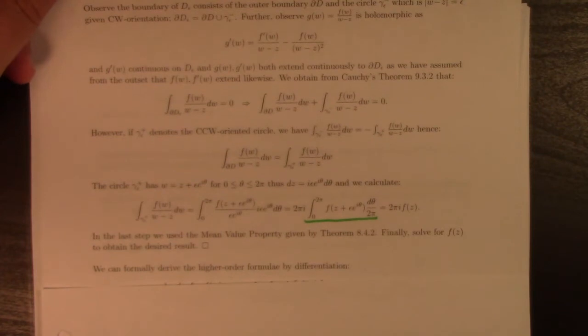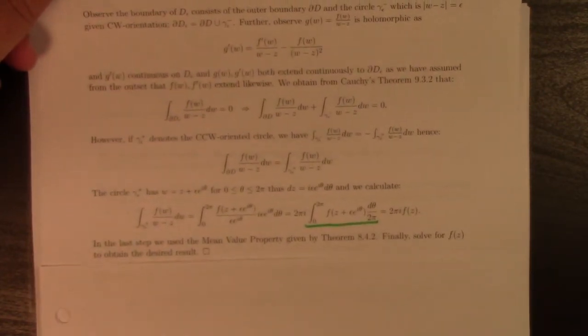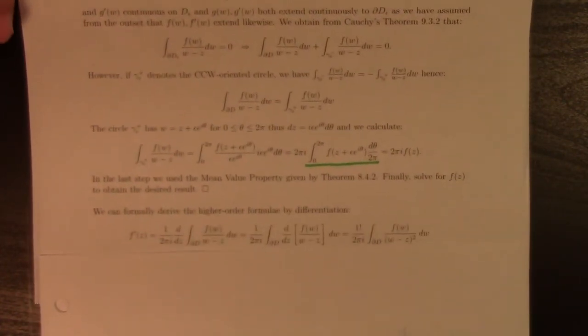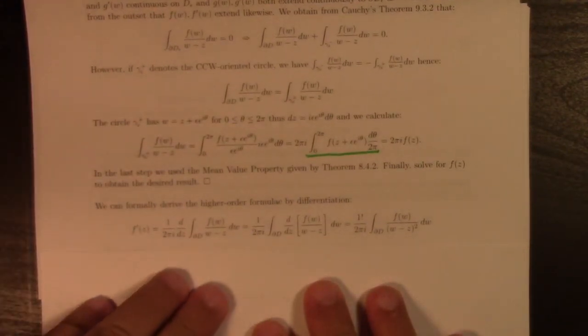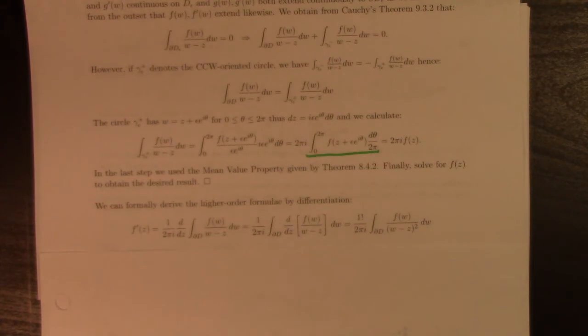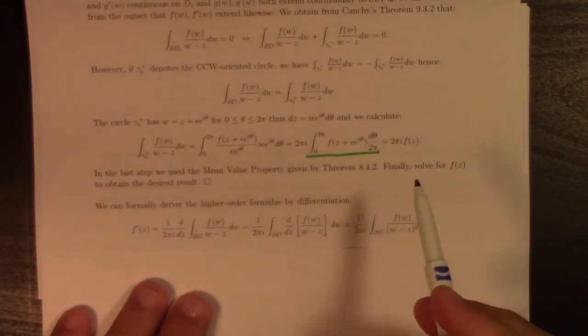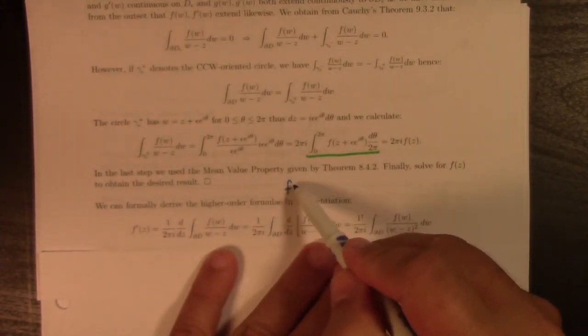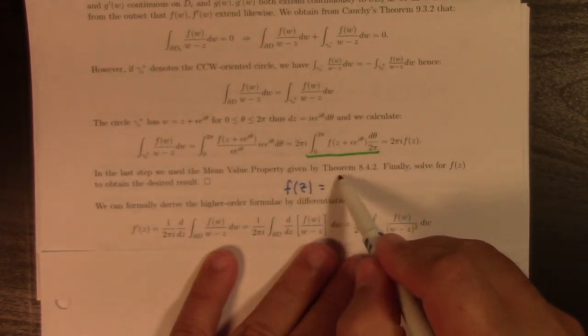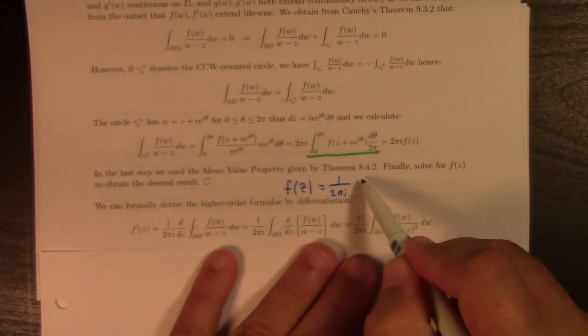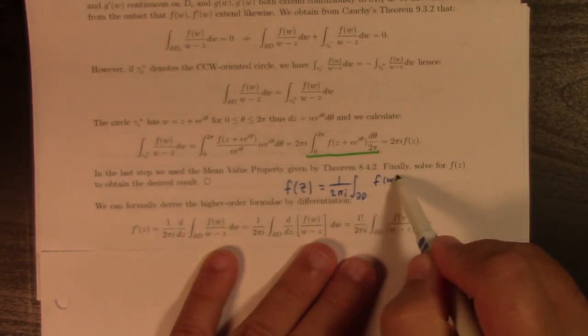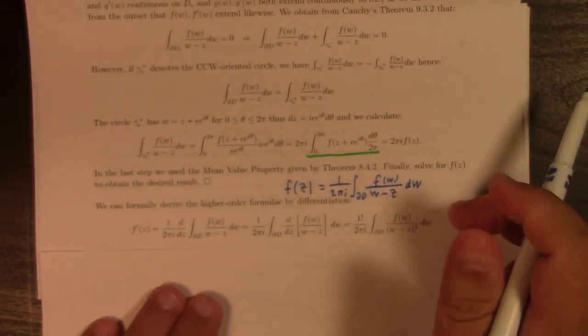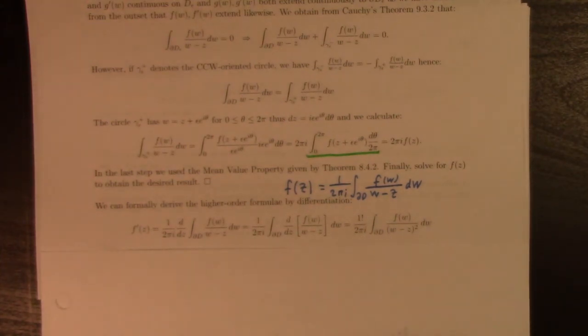Which is kind of neat. And also, you see why it was bad for me to skip the mean value property. I'm so sorry. Now, something really neat happens if you're willing to do some crazy calculations with me here.